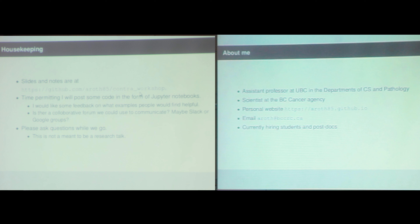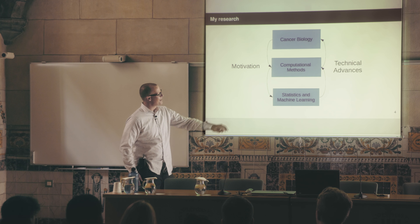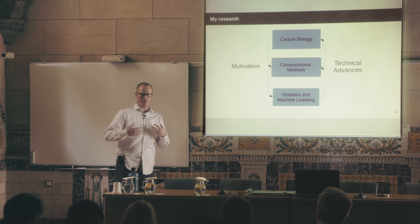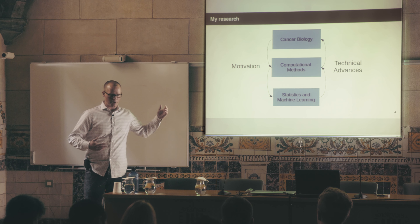A little bit about my research — I think about it in three modules. There's this overarching idea of cancer biology and specifically evolutionary questions in cancer biology. For me that often comes in the form of how can we make measurements to infer things about the evolution of tumors. That's really where we get into the middle module: computational methods, typically in the form of software that implements various probabilistic models.